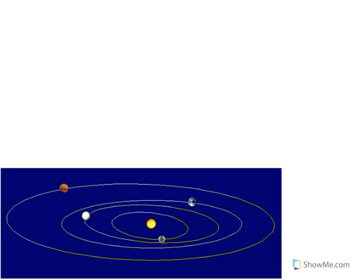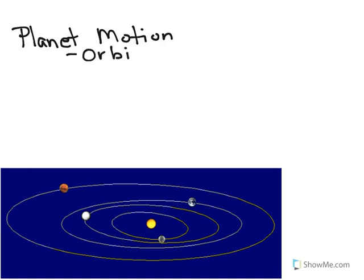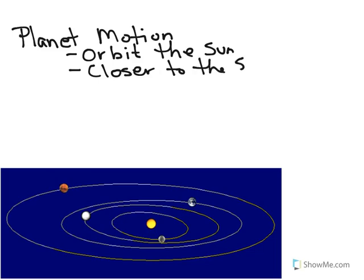In addition to the Moon being in motion, the planets are also in motion. All the planets orbit the Sun. The ones closer to the Sun orbit faster.